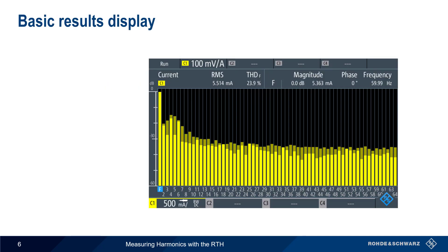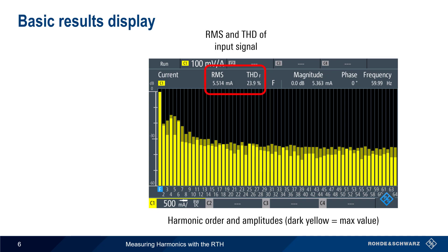Let's start by looking at the basic results display. The amplitude of each harmonic is represented by a bar with a number underneath showing the order of the harmonic. Yellow indicates the present measured value, and dark yellow indicates the max values seen since the start of the run or since results were last cleared. RMS and THD are the root mean squared value and the total harmonic distortion of the input signal. By default, the magnitude, phase, and frequency of the fundamental are also displayed.